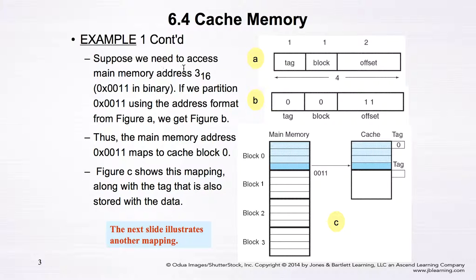Suppose we need to access main memory at address three (hexadecimal). In binary, three is represented as 0011. Using the address format, we partition 0011 into fields: tag corresponds to the first zero, block corresponds to the second zero, and offset corresponds to the last two bits.